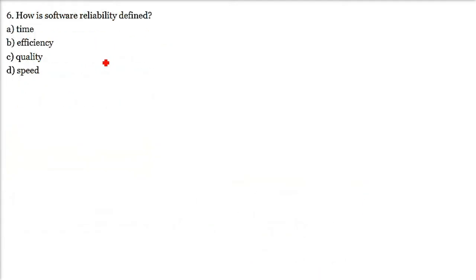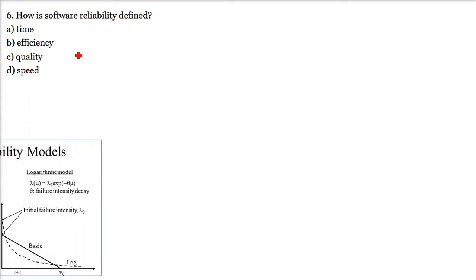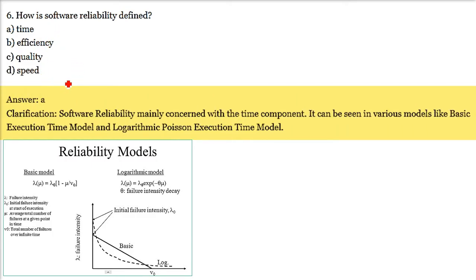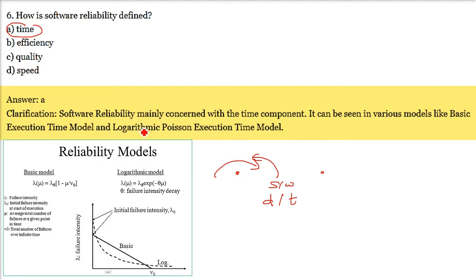How is software reliability defined? Software reliability is the probability of error-free working of software, or providing the intended functions for a specified period of time under specified conditions. Software reliability is primarily defined with respect to time. The bathtub curve shows failure rate on the y-axis against time on the x-axis, and different reliability models such as the basic model and logarithmic model are built around the time component.